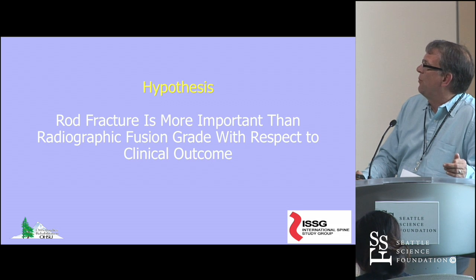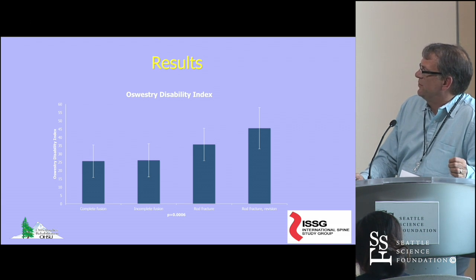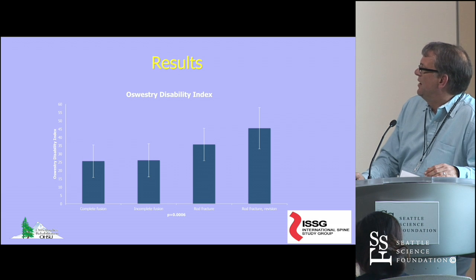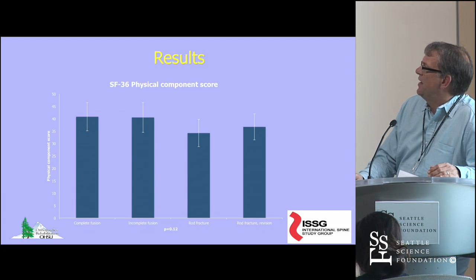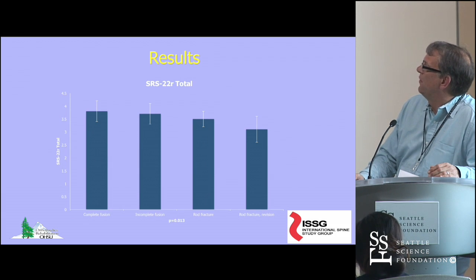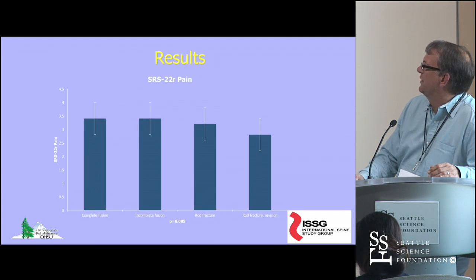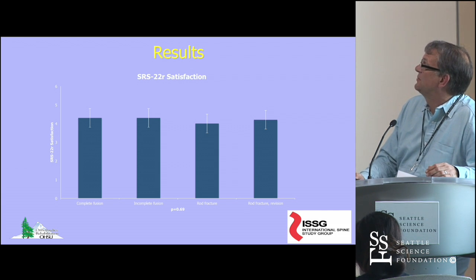We hypothesize that rod fracture is a more clinically important issue than radiographic fusion grade. Analysis of the ISSG database shows patients judged as having complete versus incomplete fusion were about equal clinically on ODI. However, rod fracture patients — particularly those who underwent revision — reported worse outcomes. The SRS total score difference was statistically significant, as was the activity score. Pain score was close but not quite significant, and interestingly, patient satisfaction was not affected.